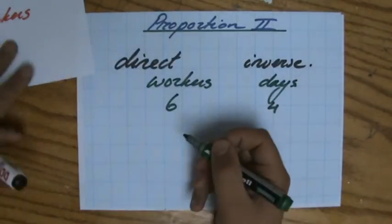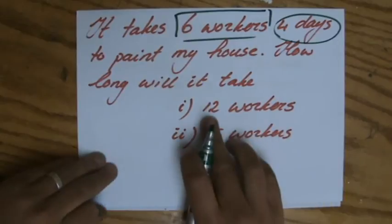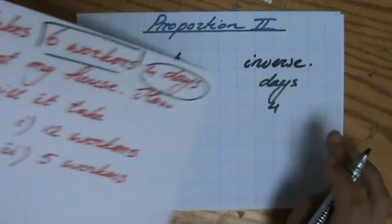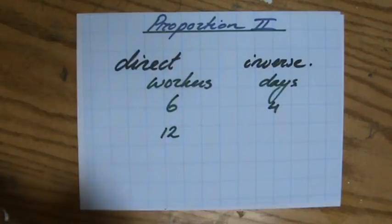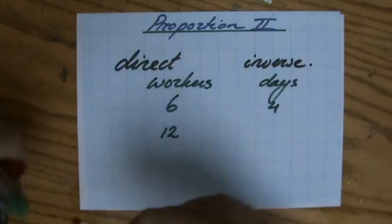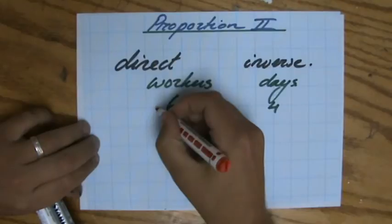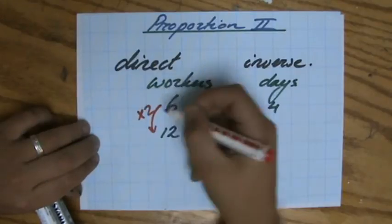And the question now is, how long would it take 12 workers to do the same job? Now, I ask myself, is this direct or inverse proportion? Let's use some common sense. I think we all see that as a factor of two. That's twice as many workers.